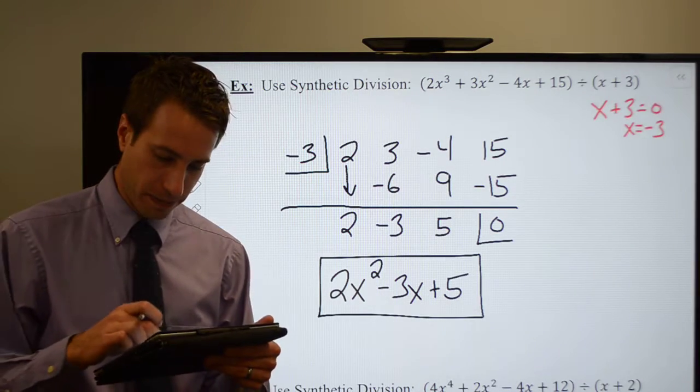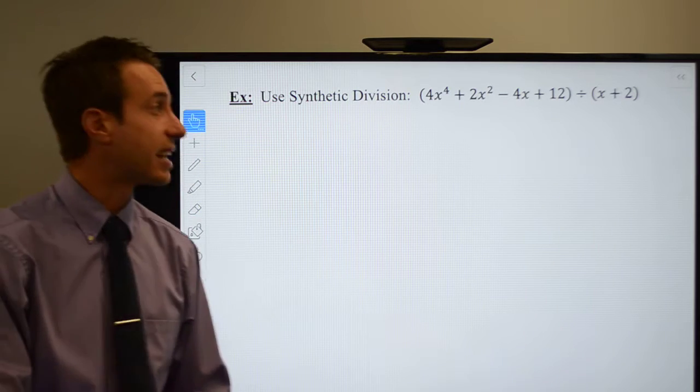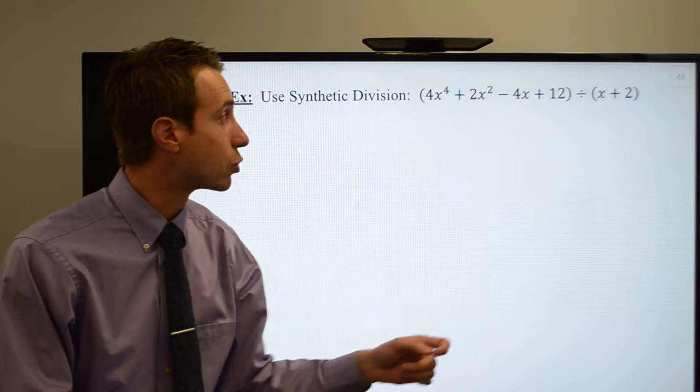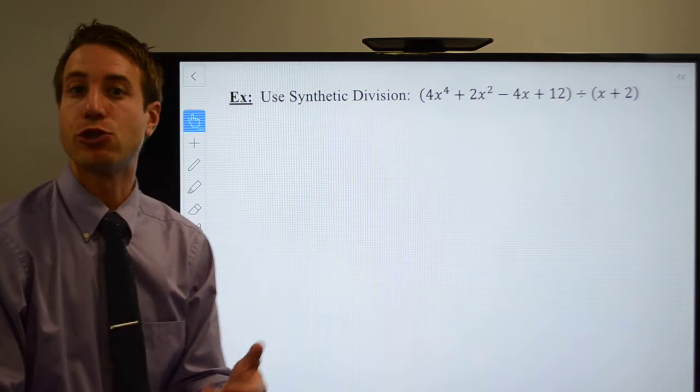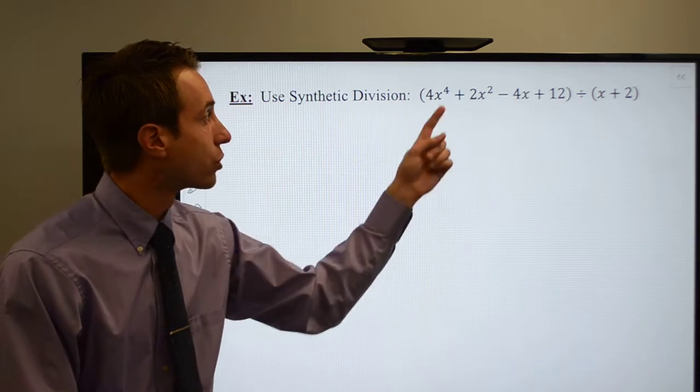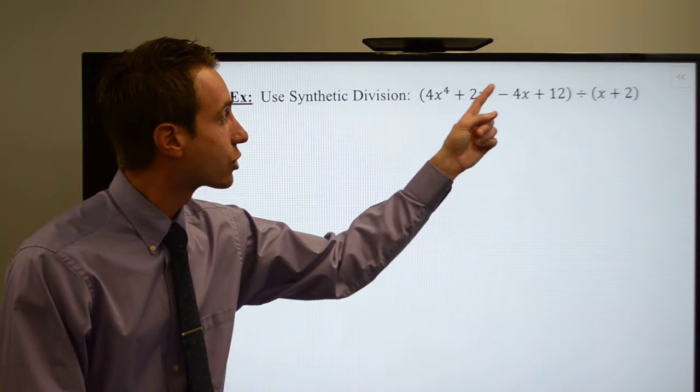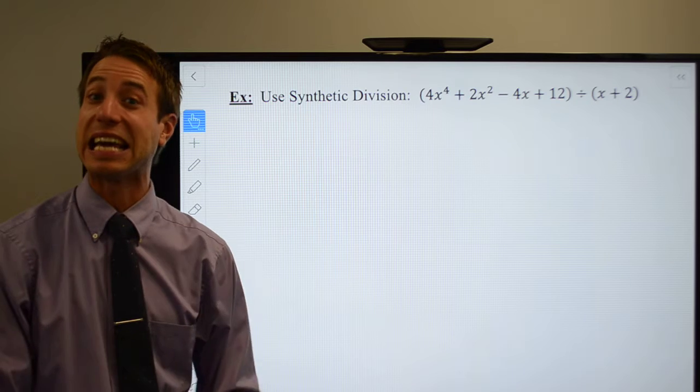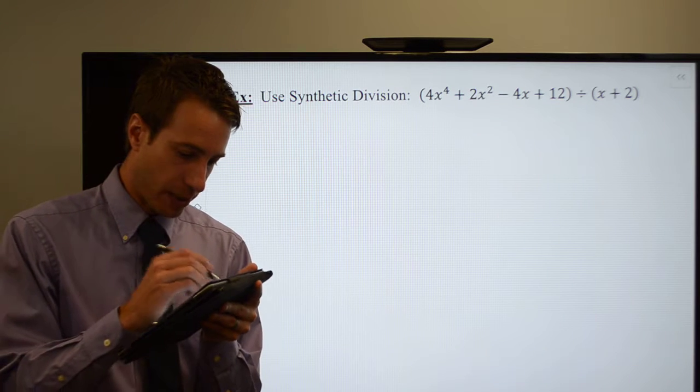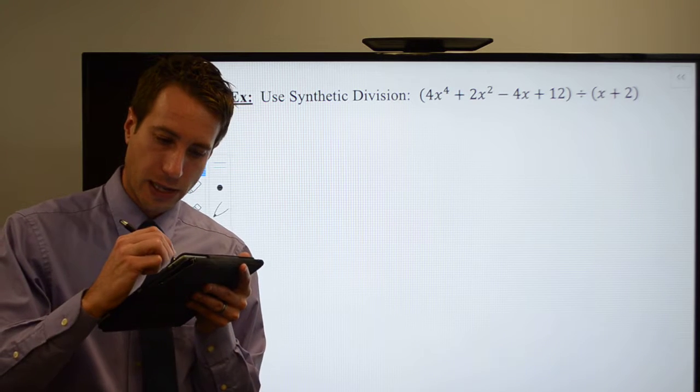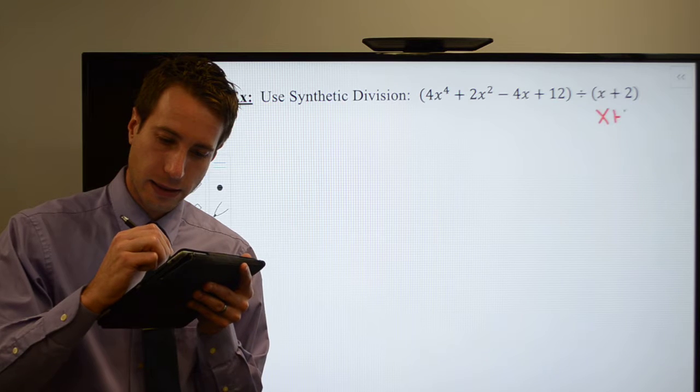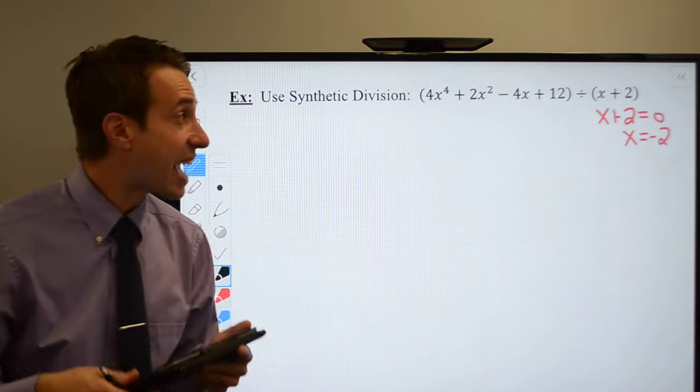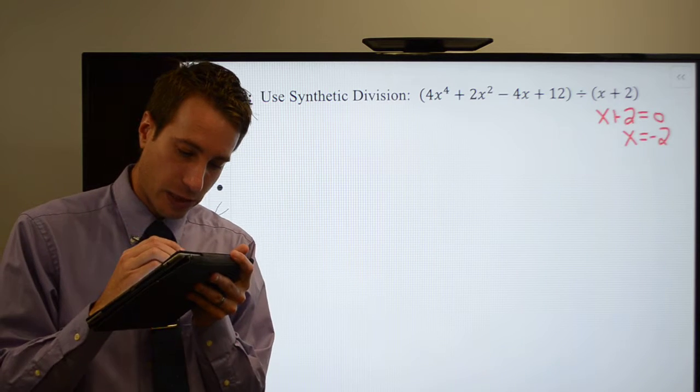Let's go ahead and do another one. Check to make sure that synthetic division will work. Leading coefficient is one, the power is one. Then all I got to do is check to make sure I don't need any placeholders. x to the fourth, x squared, x to the first, x to the third. So I'm missing the x to the third. I'm going to need to do a couple of things here. First, I need to set this guy equal to zero. And then I need to add my placeholder.